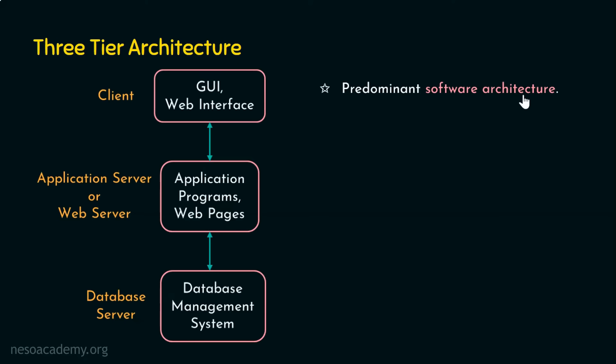The front end that we are interacting with the banking server — whether a web interface accessed through a browser or a mobile interface through an application — is actually the first tier, the client tier, the top tier. All the business logic is done in the second tier, the application level tier. And the actual data storage is at the third tier, the database tier, which is the physical or bottom-most tier.